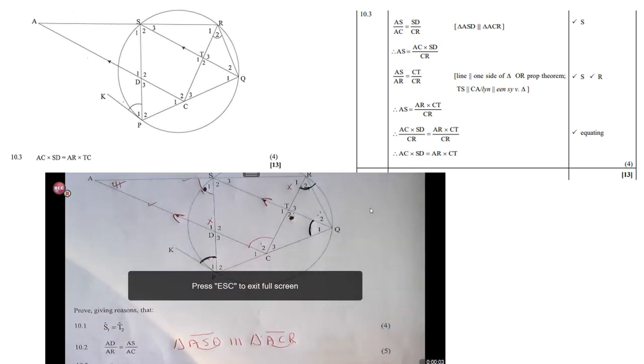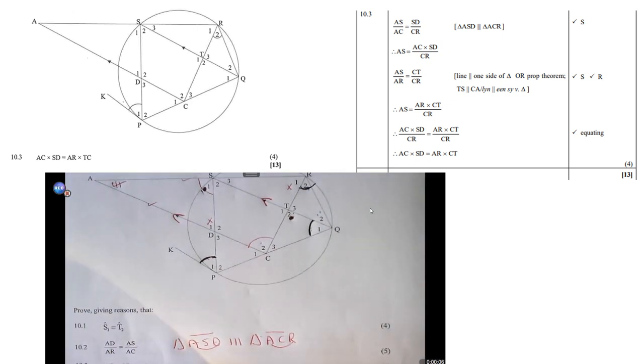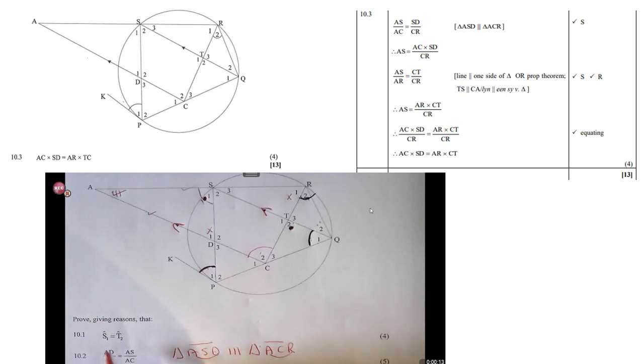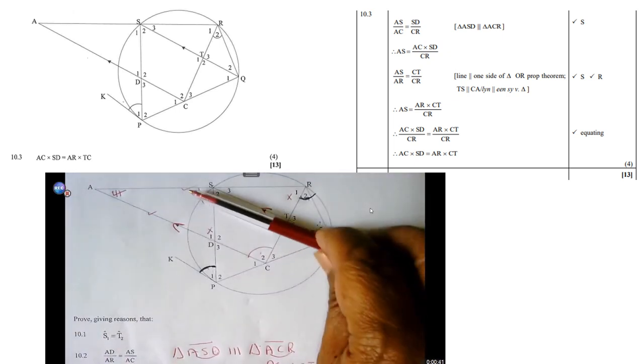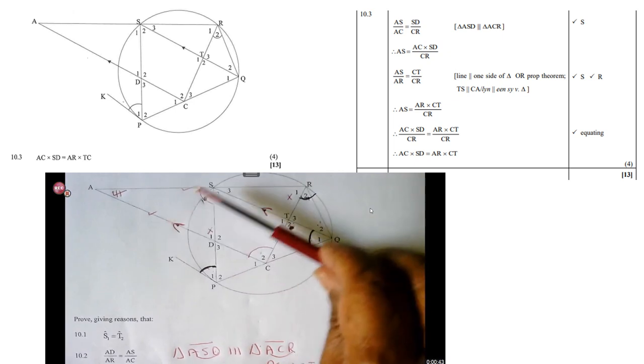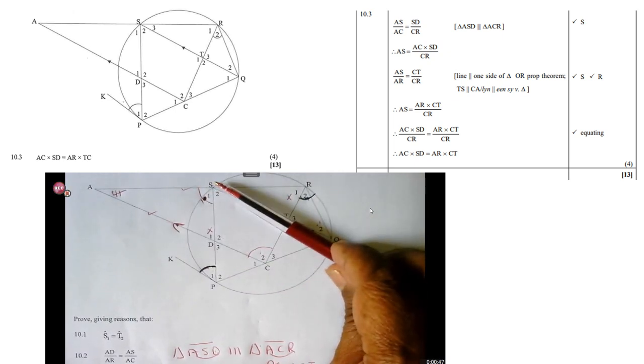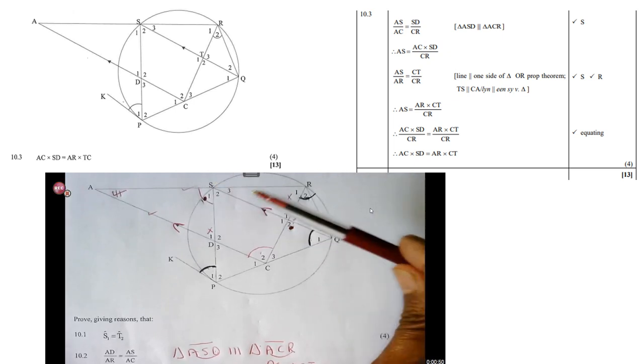Question 10.3, prove that AC times SD equals AR times TC. Now to be able to do this, I must again make use of what is given here, that AD over AR equals AS over AC. Then I cross multiply and I make AS the subject. Then I'll end up with AS equals AC times CT over CR. It's there in the memo. Then I go to those two lines which are parallel.